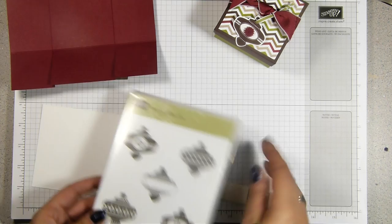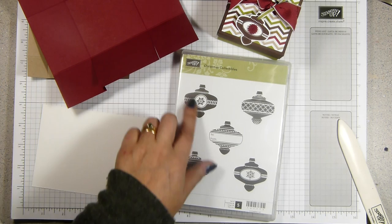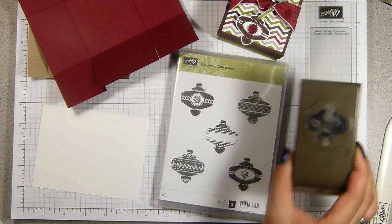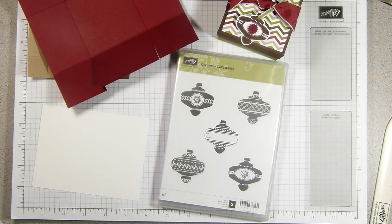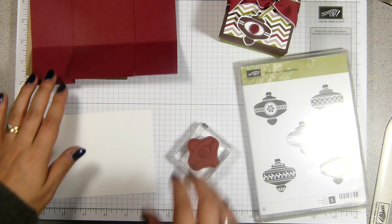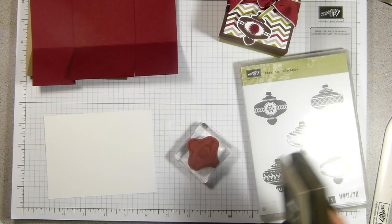And I've used the Christmas collectibles set, which is lovely. It's a bit Scandinavian maybe, with some of these sorts of designs. Very popular now. And the matching Christmas ornament punch. It's actually on a bundle in the catalogue, which I love. I love punches anyway. And particularly to get 15% off. I think it's £25 for the two. Which is pretty good value because these are £15 on their own anyway.